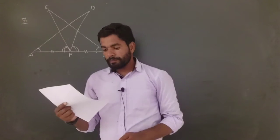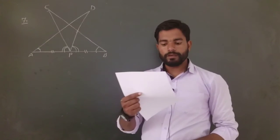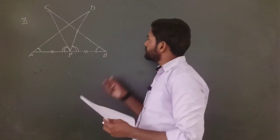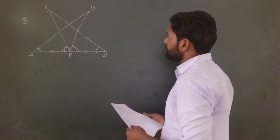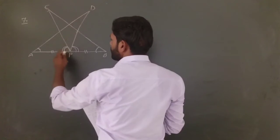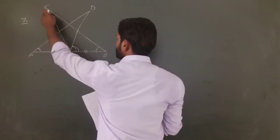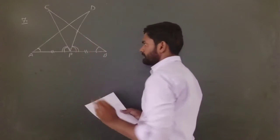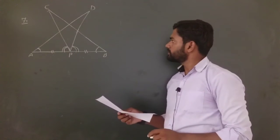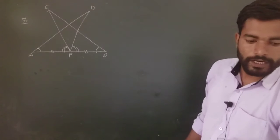Then prove that triangle DAP is congruent to triangle EBP. Second, AD is equal to BE. So let's start.